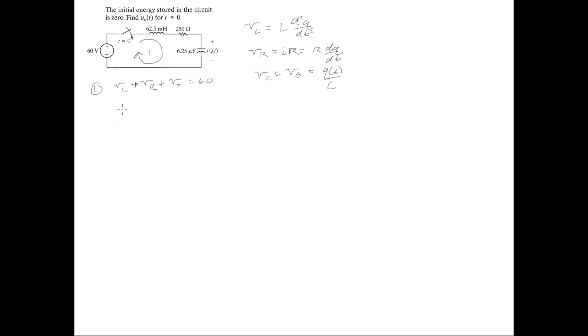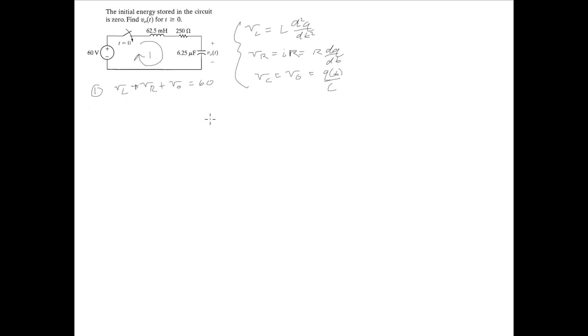So we're going to make all these substitutions into this original equation. So here we have then L d²Q/dt² plus R dQ/dt plus V0, which is just Q(T) over C, which is equal to 60.